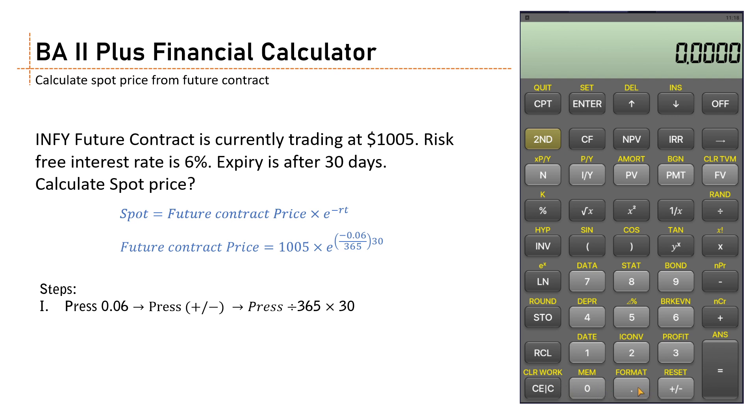Step one: Clear the work. Enter the interest rate, that is 0.06. Now what we do is we press the plus minus button here, so I put a minus sign here to discount it. And then we divide it with 365 and then multiply it with 30 days.